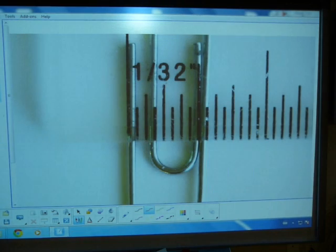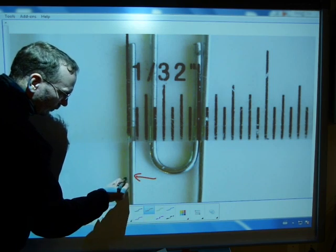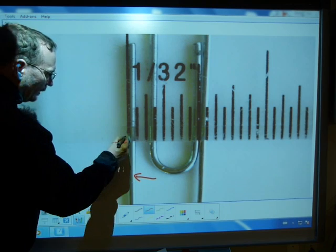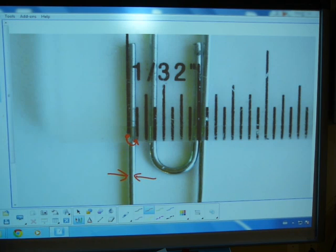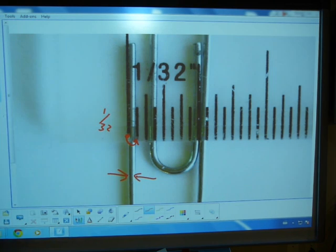So this is a paper clip under the ruler. The wire the paper clip is made of has a thickness of exactly 1/32nd of an inch. You start at zero here, and it's 1 jump, 1 increment, that's 1/32nd of an inch for the wire diameter.